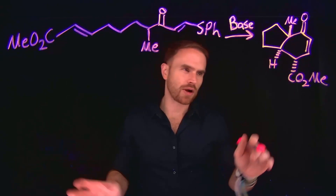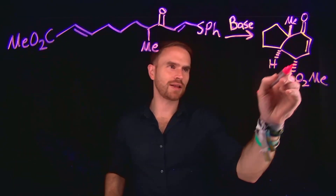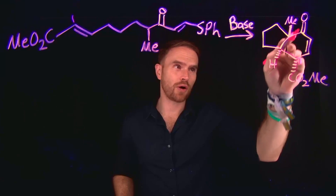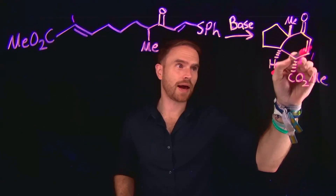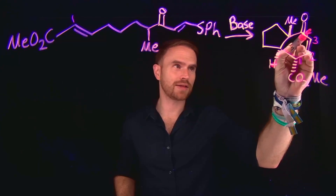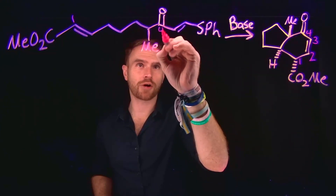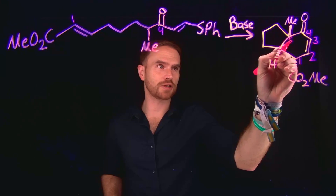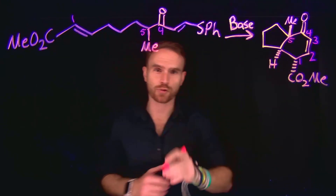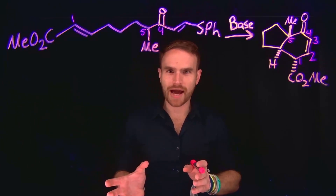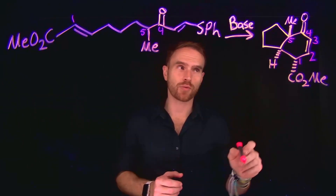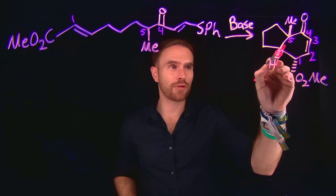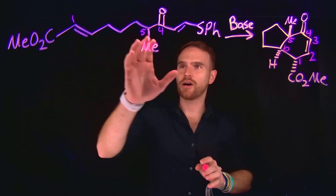Looking at the functional groups present, we see we have an ester here and an ester here. So it's likely that this is carbon 1, meaning that this must also be carbon 1. We also see that there's a carbonyl group, and according to this ring, if this is the second carbon, this is the third, and this is the fourth — somehow this must become carbon number 4. Notice that it's adjacent to a carbon which contains a methyl group, so that 5 position must be this position containing this methyl group. There must be some sort of ring-forming reaction that allows us to form this 6-membered ring, and this only leaves one other carbon I can't easily identify on the linear chain immediately.